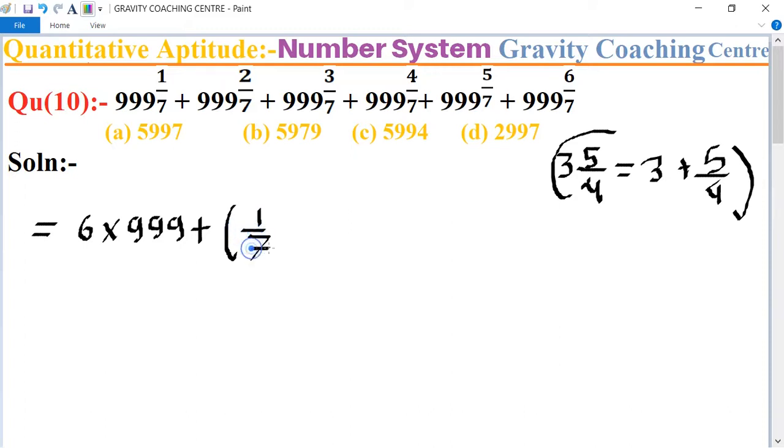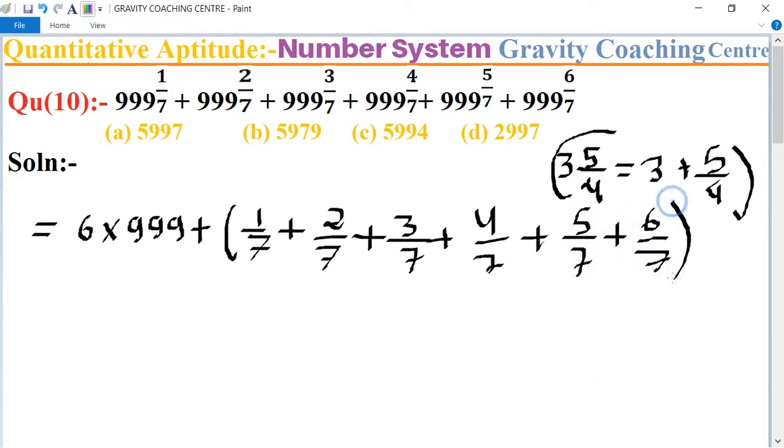One upon seven plus two upon seven plus three upon seven plus four upon seven plus five upon seven plus six upon seven. So equal to, the product of six into triple nine equal to five double nine four.